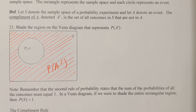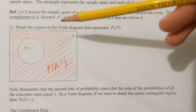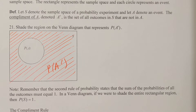Previously when we were talking about Venn diagrams, I was using the term universal set. In probability, we use the term sample space. Let S denote the sample space of a probability experiment and let A denote an event. Then the complement of A, denoted by A complement — A with a dash by it — is the set of all outcomes in the sample space that are not in A. We've worked with complements before in chapter 2.